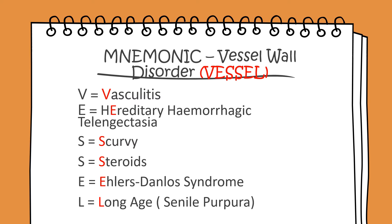We'll look at the conditions that cause vessel wall disorders using the mnemonic VESSEL: V equals vasculitis; E equals hereditary haemorrhagic telangiectasia (E is the second letter in hereditary); S equals scurvy; S equals steroids; E equals Ehlers-Danlos syndrome; L equals old age (in brackets, senile purpura).